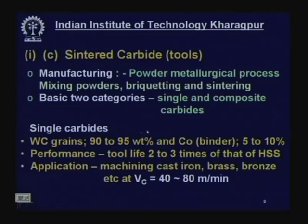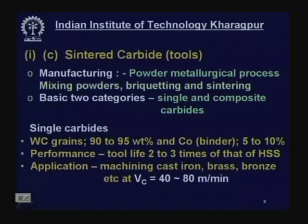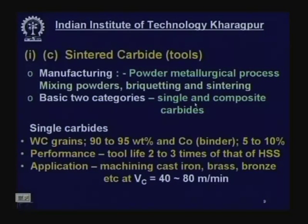Though single carbide was a novel breakthrough, it was suitable only for materials producing short and discontinuous chips, which do not stay long on the tool surface and do not generate much temperature. When used to machine ductile steel, continuous chips formed, creating bulk continuous contact over the rake surface. Lots of heat was generated, causing high cutting temperature that led to rapid wear by adhesion and diffusion of cobalt and carbon from tool to chip. Single carbide was therefore not suitable for steel machining.